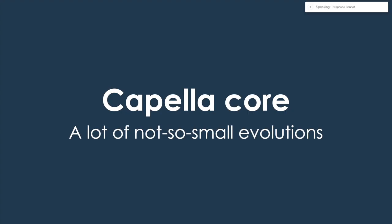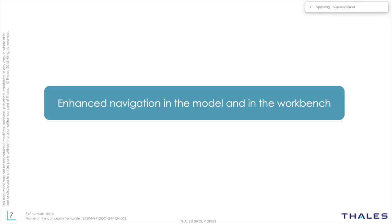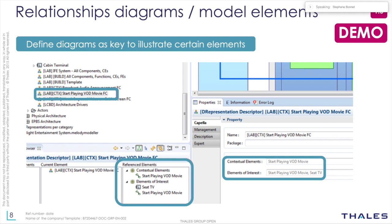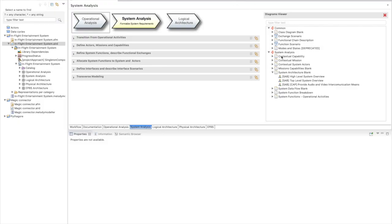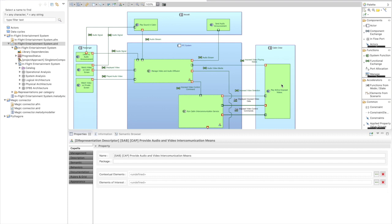I'm going to start with the core of Capella — there are quite a few significant evolutions. By Capella core I mean what you get when you download Capella. The first set of evolutions is for enhanced navigation in the model and workbench. The first one is we've added a relationship between diagrams and model elements. Pretty often when you want to explain one specific model element, you want to say this particular diagram is really interesting to understand this element.